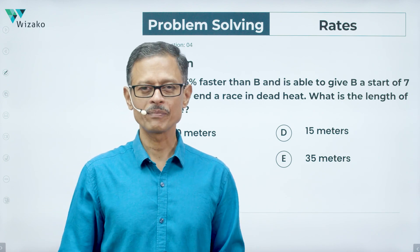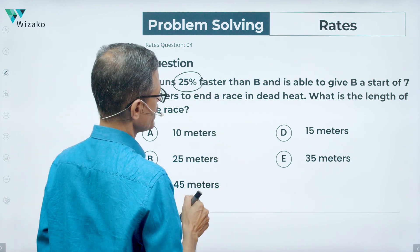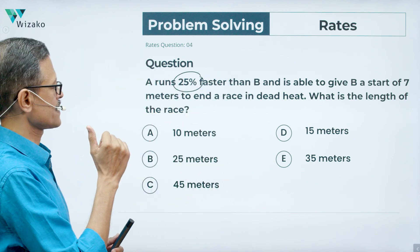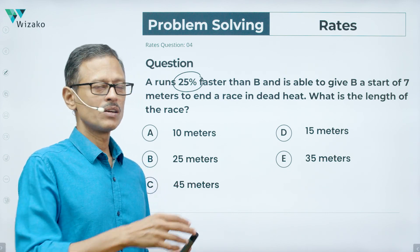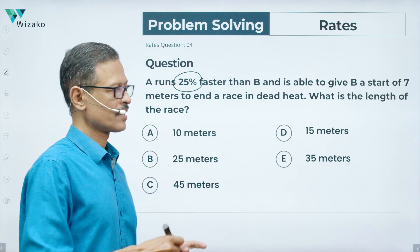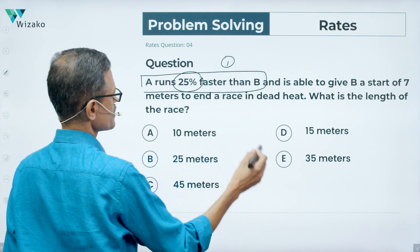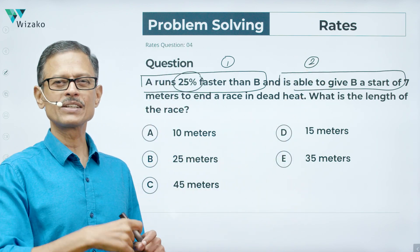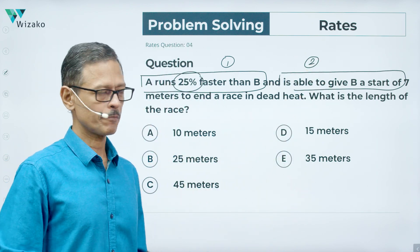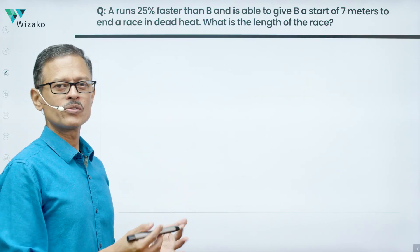A runs 25% faster than B and is able to give B a start of 7 meters to end the race in a dead heat. What is the length of the race? We'll decode the first part, understand this, and then plug in the second information and solve the question. It's essentially a two to three step process.